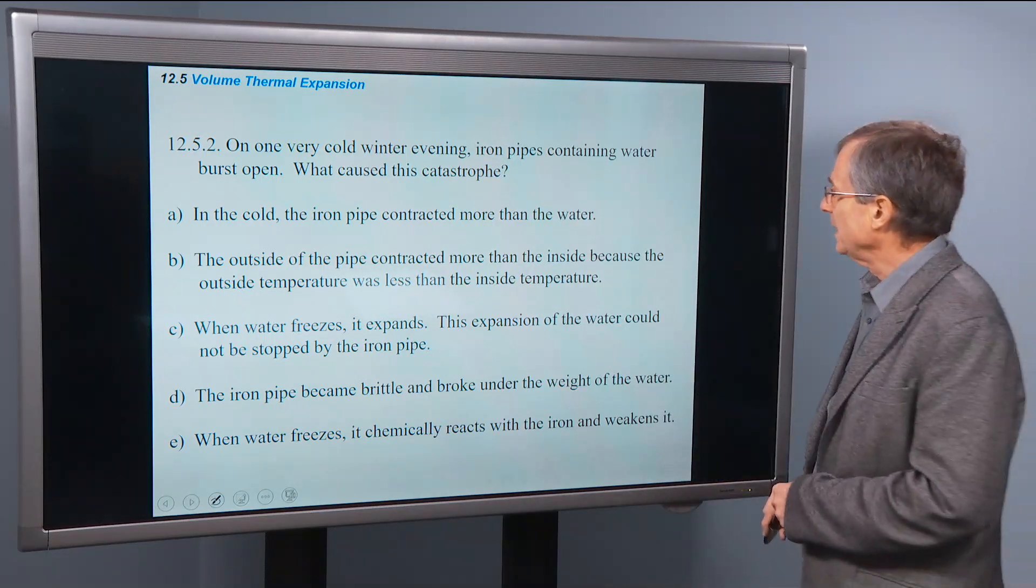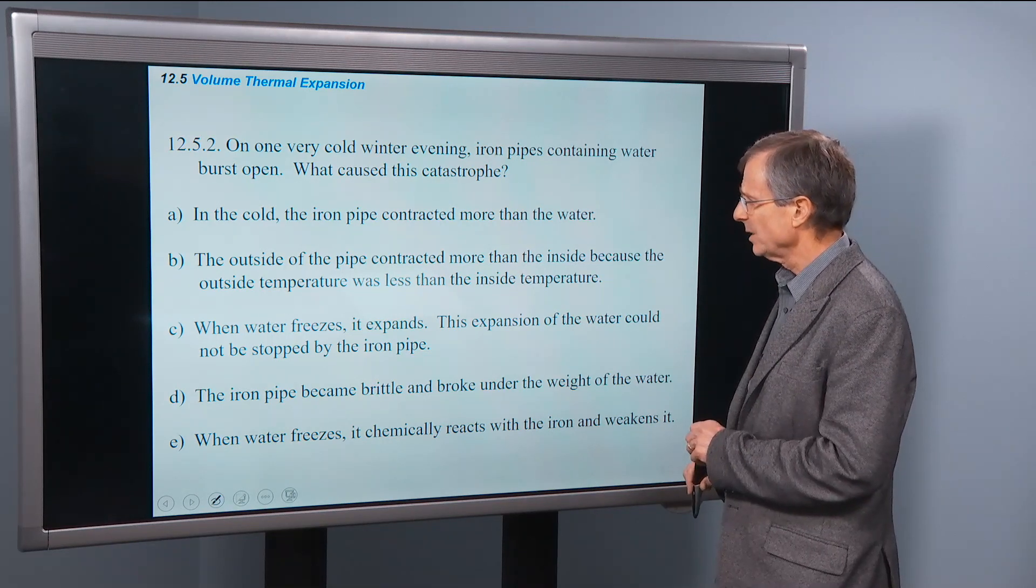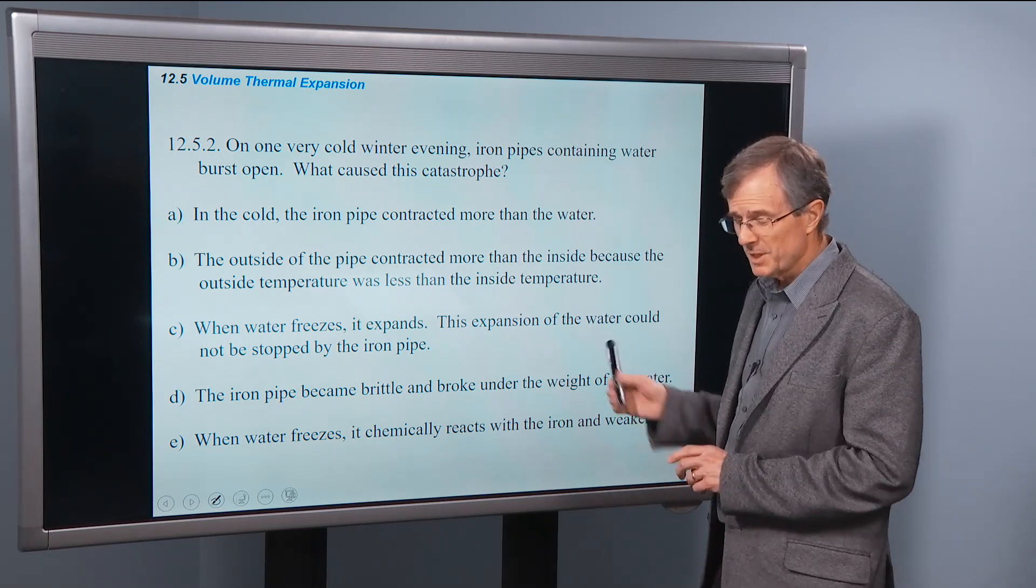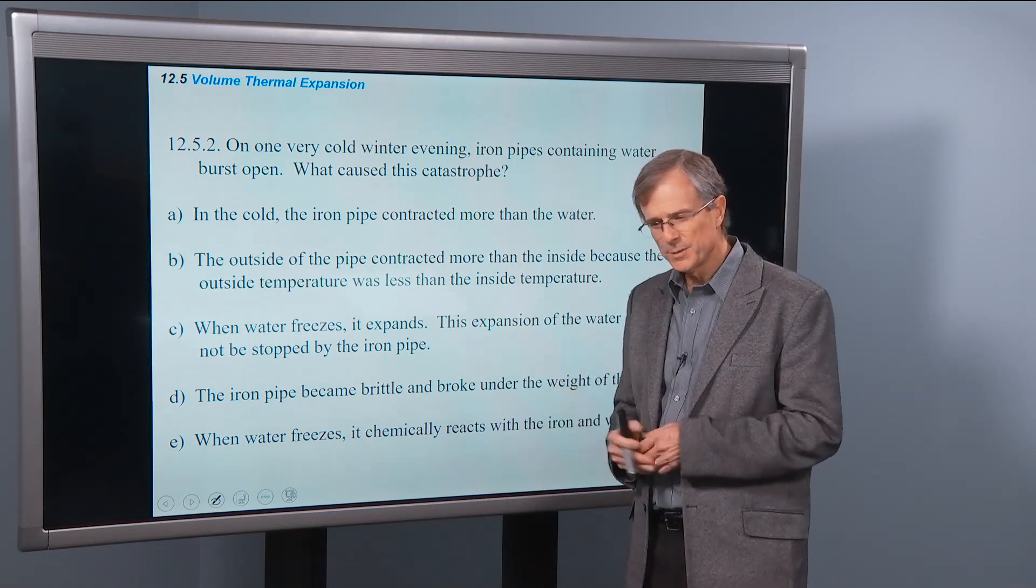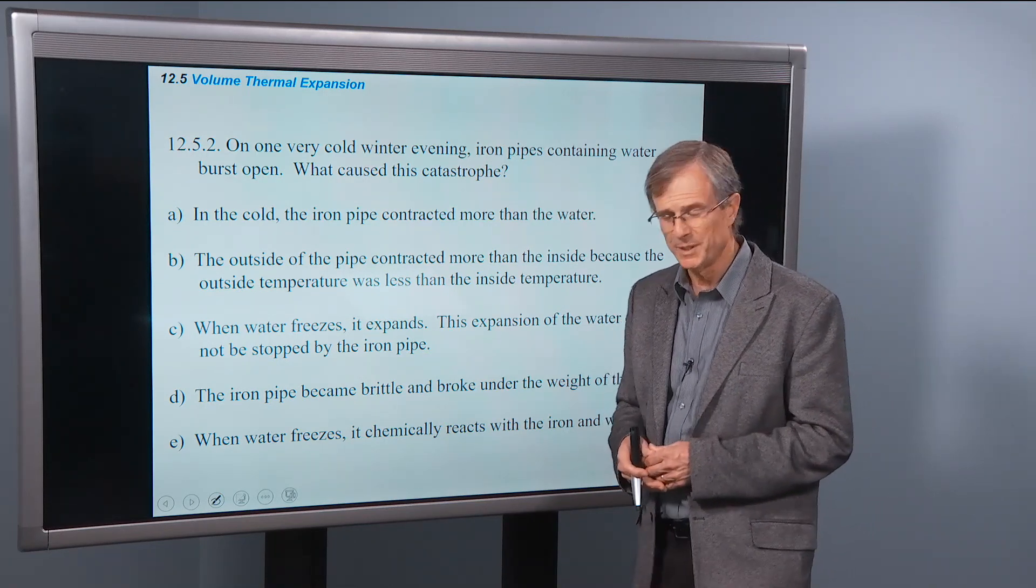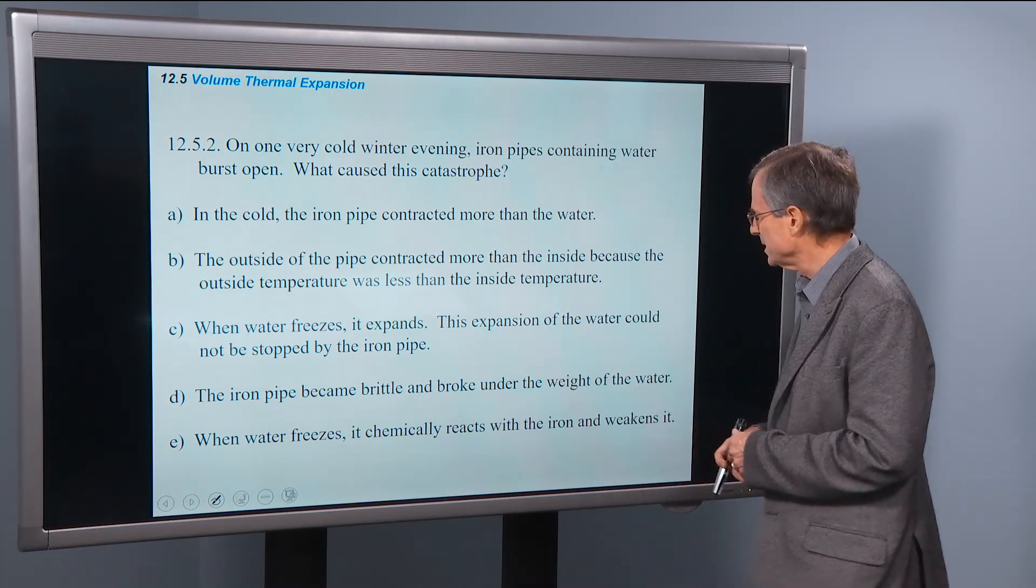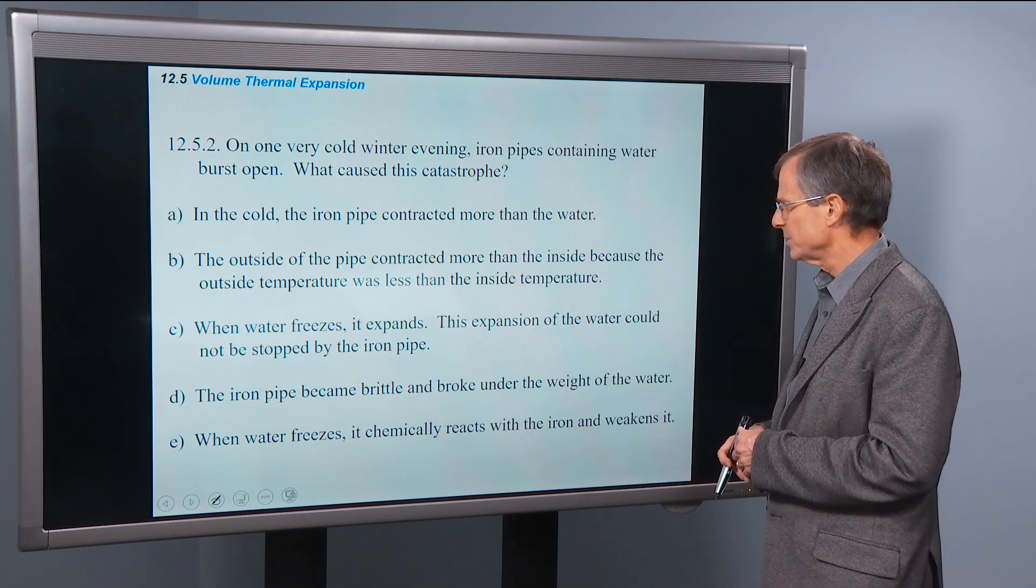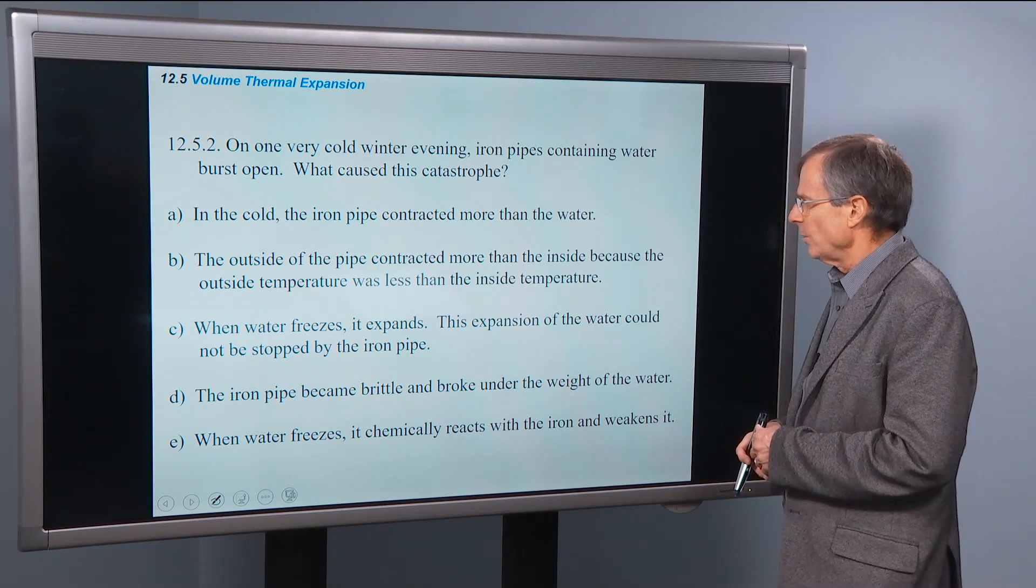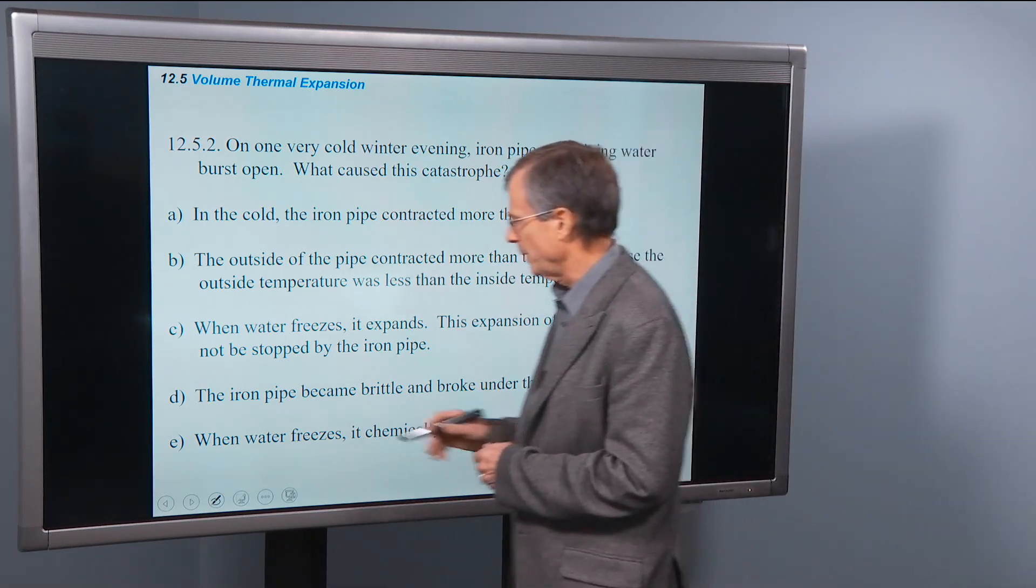Very cold winter evening, iron pipes containing water burst open. What caused this catastrophe? In the cold, the iron pipe contracted more than the water. Actually, as we saw in the previous example, the difference between the expansion of the copper and the water was very slight. Not a very big deal. So that's not it. The outside of the pipe contracted more than the inside, because the outside temperature was less than the inside temperature. When water freezes, it expands. This expansion of the water could not be stopped by the iron pipe.